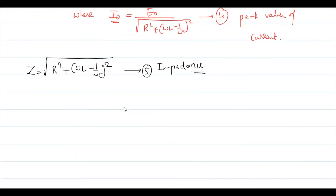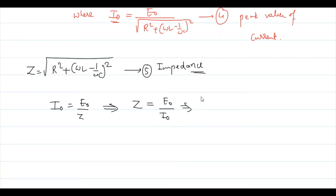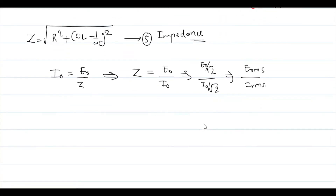From Ohm's law, current equals voltage divided by resistance. Here Z plays the role of resistance, and I₀ = E₀/Z, so Z = E₀/I₀. Dividing both numerator and denominator by √2, the peak values divided by √2 give RMS values: Z = E_rms / I_rms.